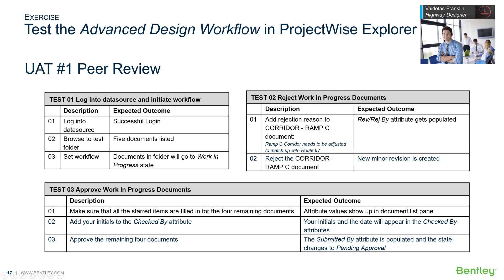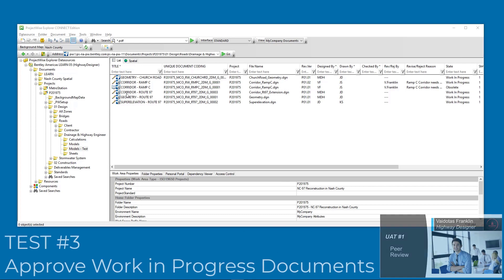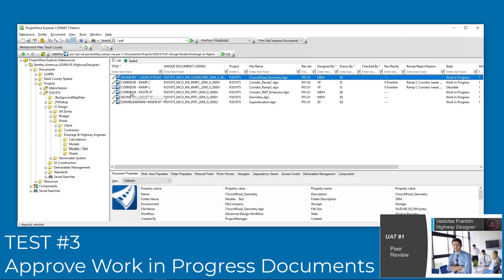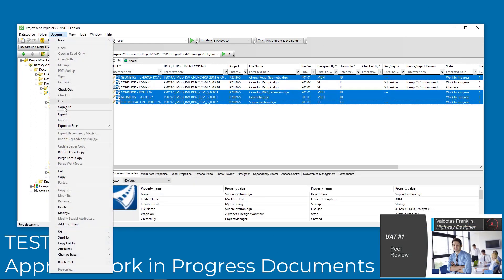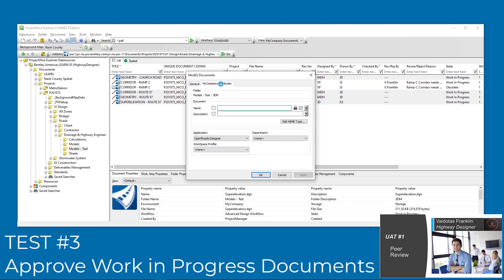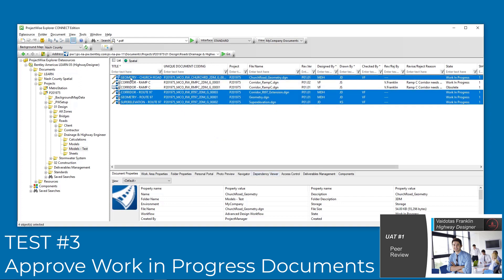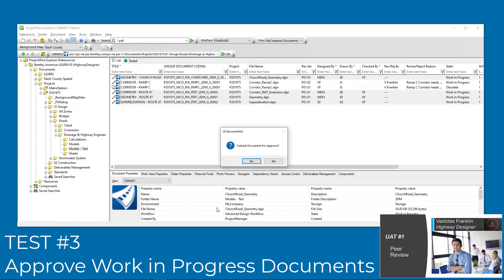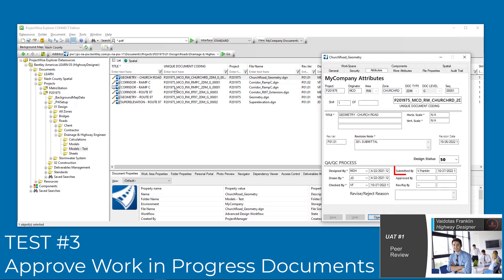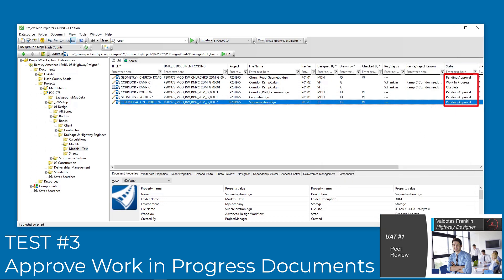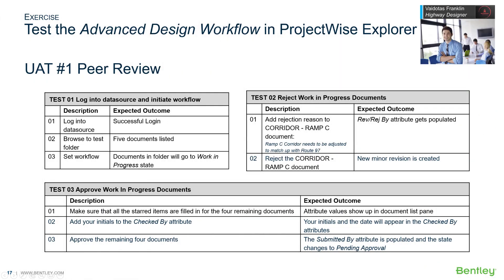Test 3. Viadotis has received the other models and reviewed them, and all seems well. He fills in the Check By attribute for all of them at once using the modify tool. He then approves all at once and verifies that the Submitted By attribute is populated and that the state changes to pending approval for each document. Test 3 passes.